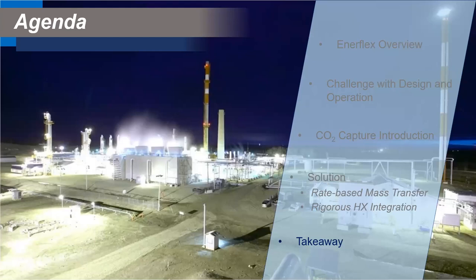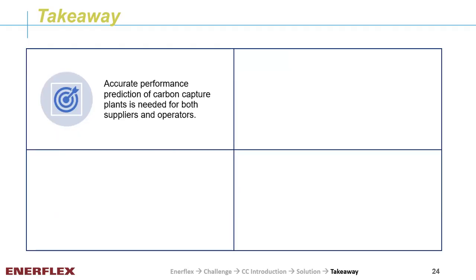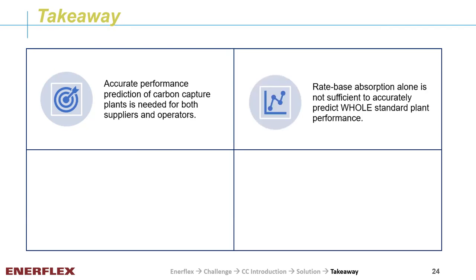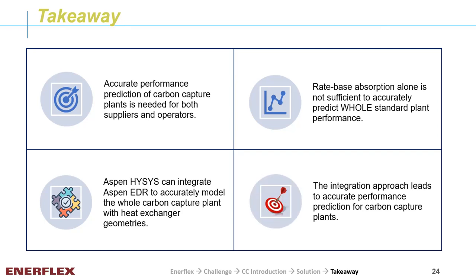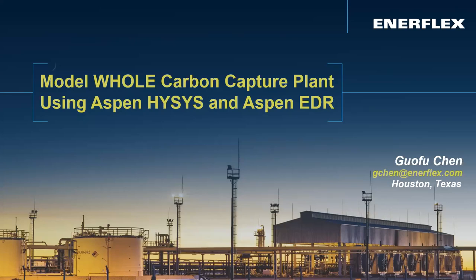After a long ride, we are finally at the last station. Before you leave, I would like to offer something to take away. Accurate performance prediction of carbon capture plants is needed for both suppliers and operators. Rate-based absorption alone is not sufficient to accurately predict the whole carbon capture plant. Aspen HYSYS can integrate Aspen EDR to accurately model the whole carbon capture plant with heat exchanger geometries, leading to accurate performance prediction. Thanks very much for riding with me — I hope to see you soon on our next journey.